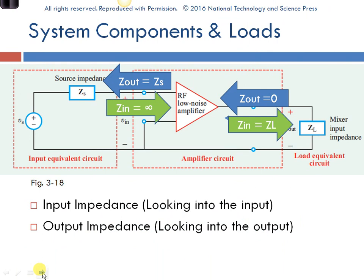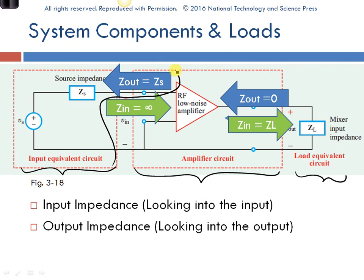Now let's consider the basics of input and output resistance. Here is an example of an equivalent circuit that we would be very likely to build. We would have a source right here with its input equivalent, connected onto some kind of amplifier circuit driving some sort of load. If we wanted to figure out how these were working, we would consider the input and output impedances of each of our blocks. Here, for example, is our input circuit. Now even though it's called an input circuit, you notice it doesn't really have an input resistance — it only has an output resistance. The output resistance looking in — what resistance would be here? We would short out our voltage source, and the only resistance there would be Zs.